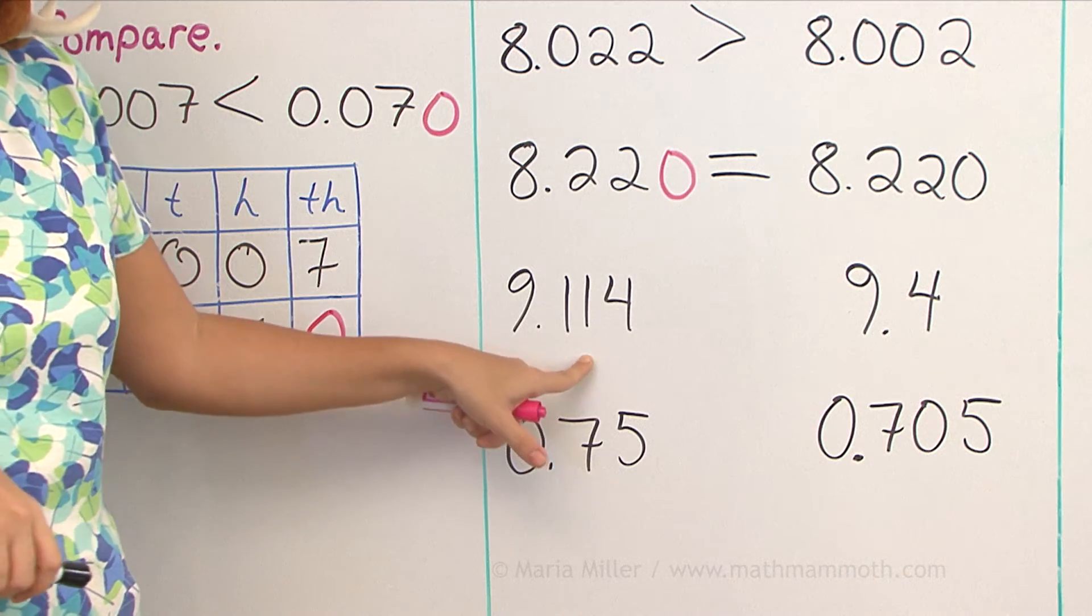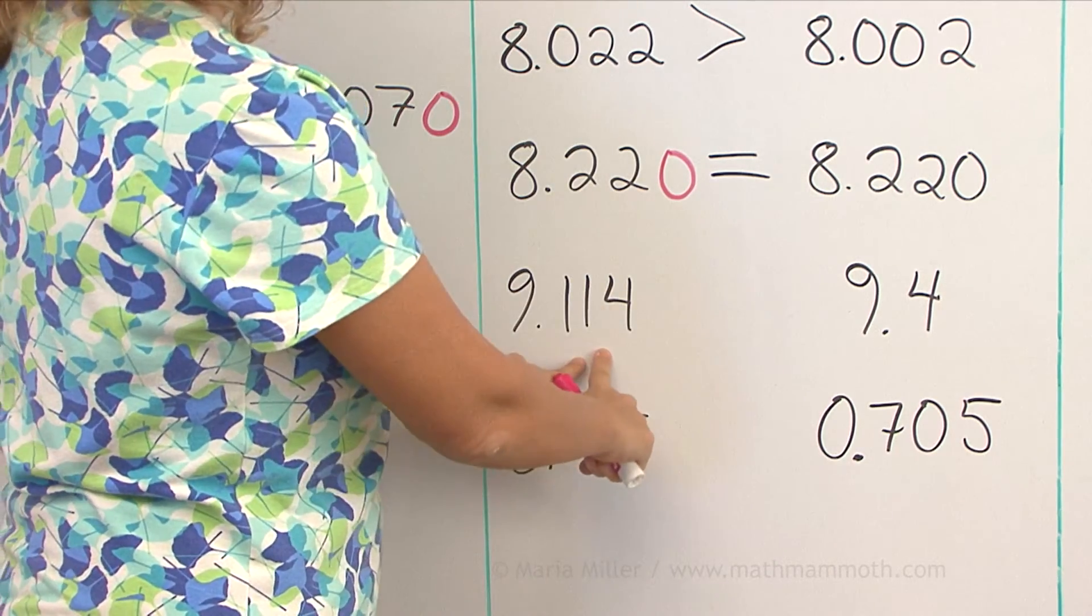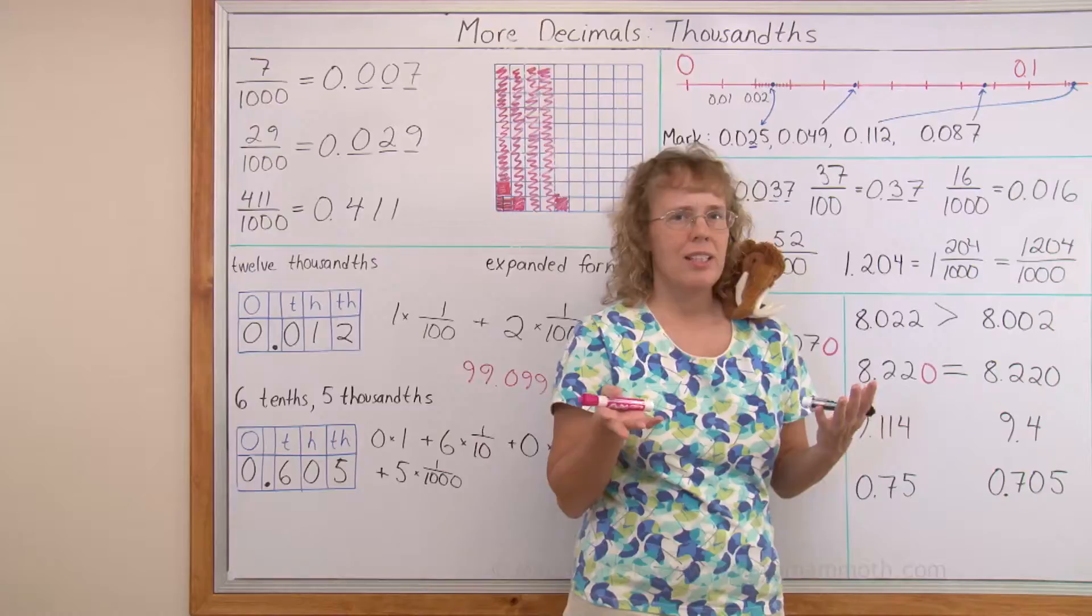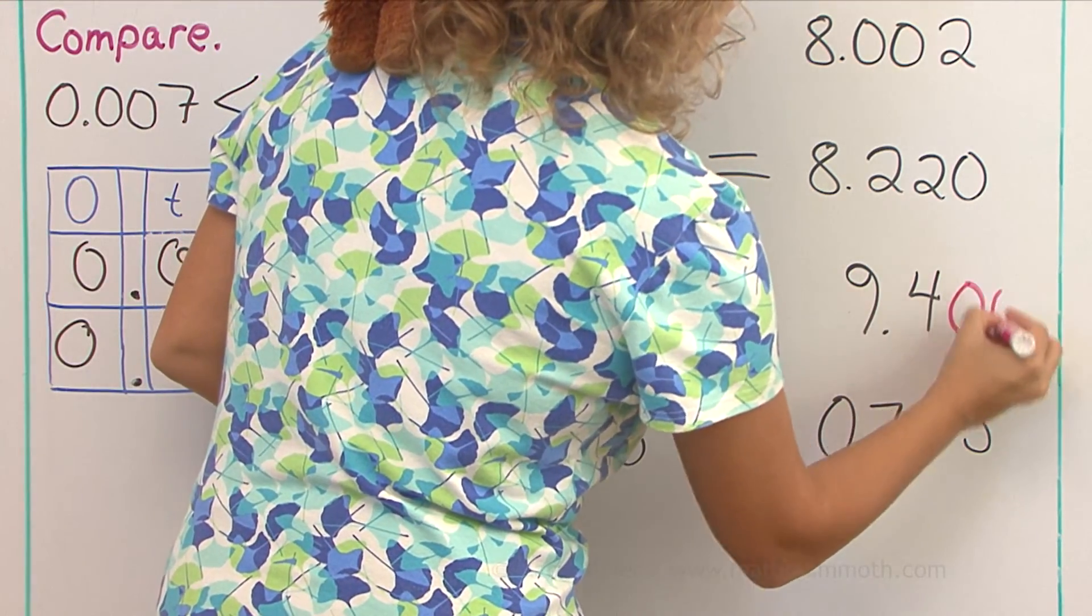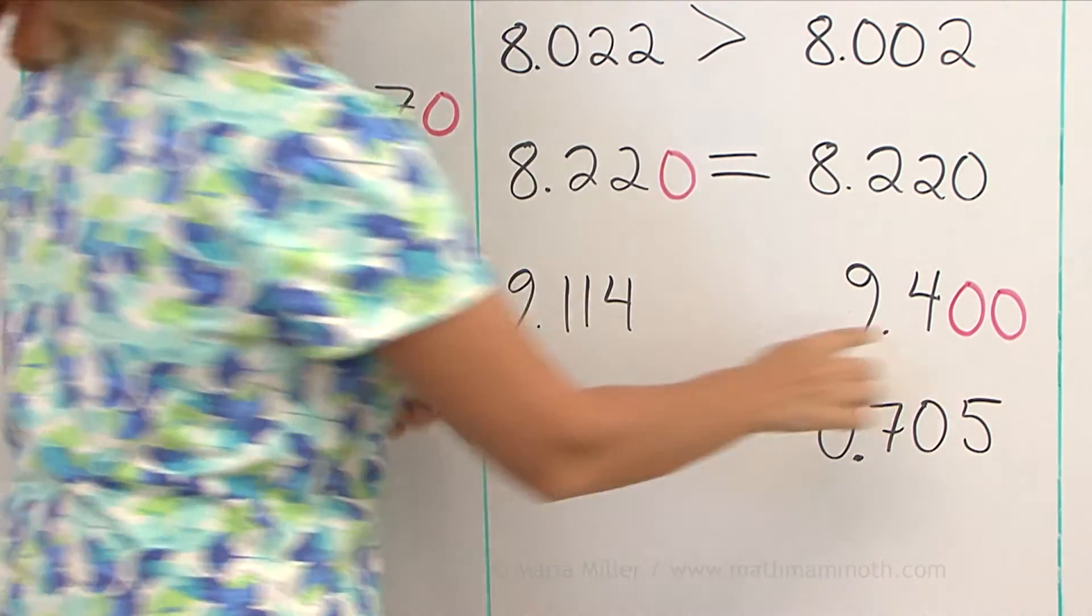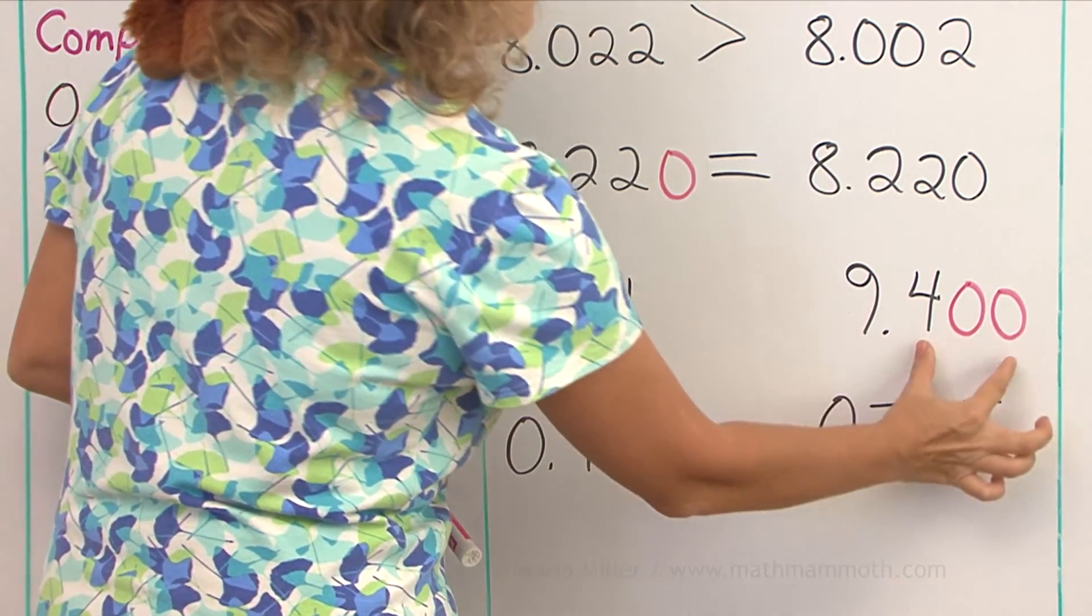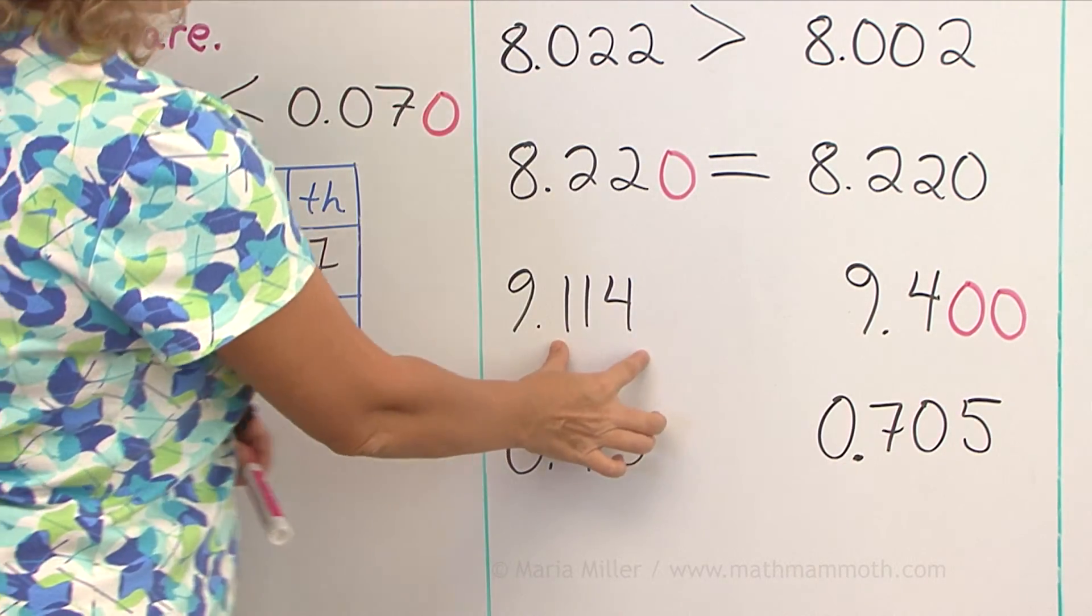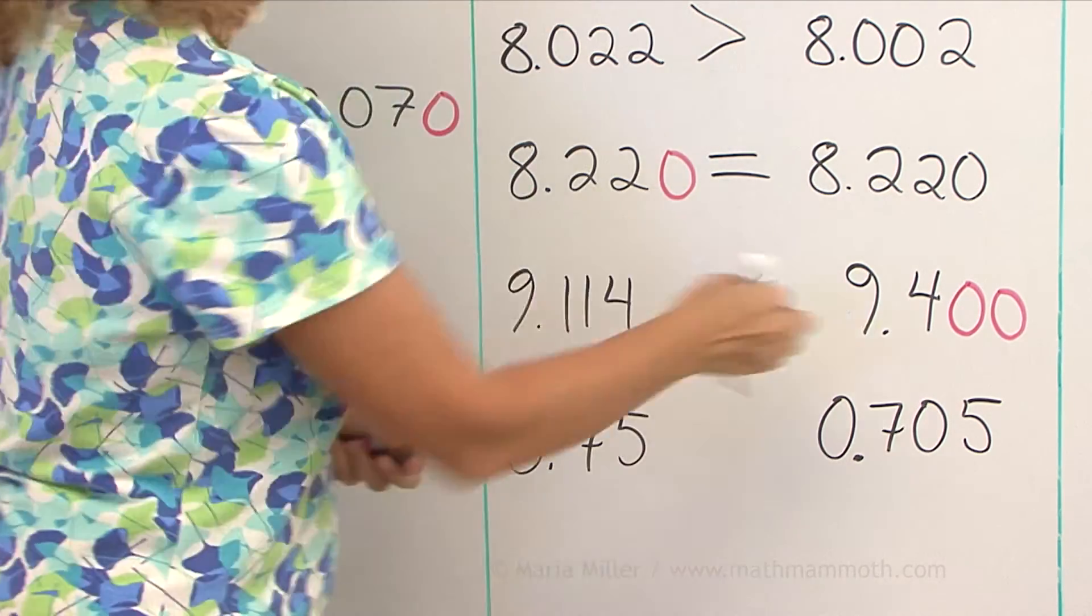How about here? Again, it might look like that one hundred fourteen is more than four, but you cannot compare it that way. That's the wrong way, that's a misconception. I can use my trick, and put zeros here, in the hundredths and thousandths places, and read this number as nine and four hundred thousandths. And this one has nine and one hundred fourteen thousandths. So easy. This one is more.